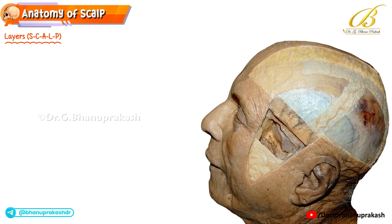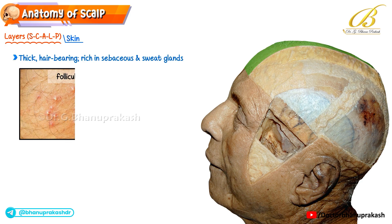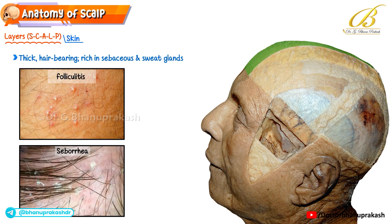Let's walk through the five layers of the scalp using the classic mnemonic SCALP. We begin with skin — a thick, hair-bearing layer packed with sebaceous and sweat glands. Because of this richness, conditions like folliculitis and seborrhea are common here. The skin is also very well vascularized, which means wounds heal quickly but also bleed quite heavily.